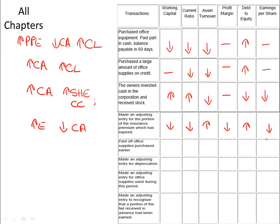And earnings per share will be reduced. If we paid off the office supplies purchased earlier, that means our current liability — accounts payable — is being reduced, as is our current asset cash. Since both current asset and current liability are being reduced, working capital has no impact. But because of the proportionality of the numerator and denominator, the current ratio will increase, as will the asset turnover. Since there's nothing about the income statement, nothing to the profit margin or earnings per share. And debt to equity will be reduced, as liabilities were reduced.